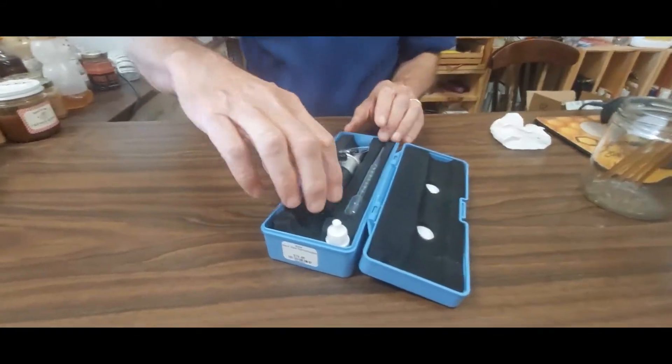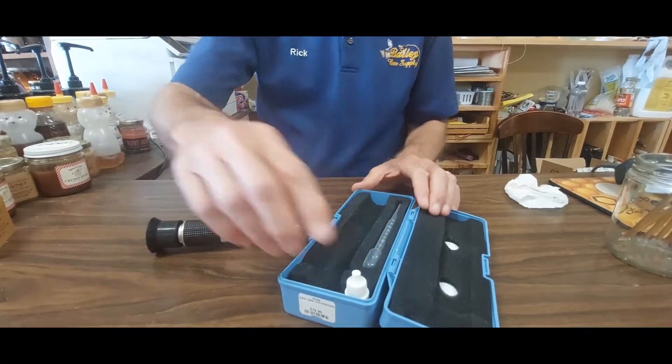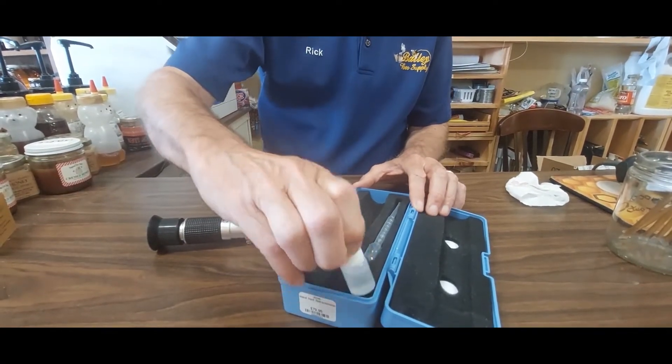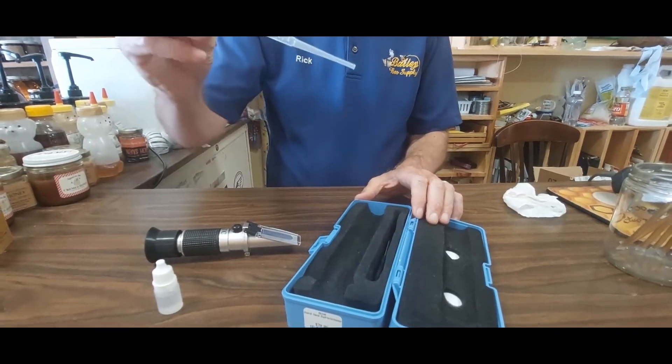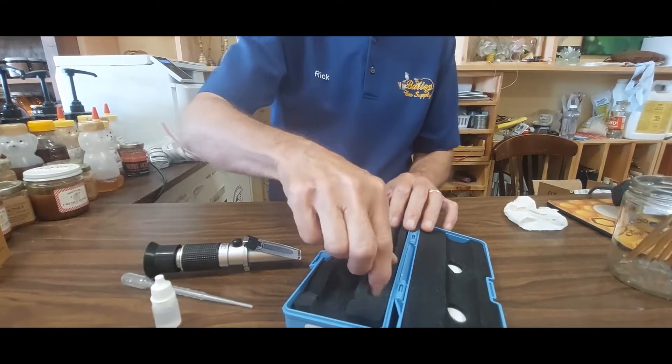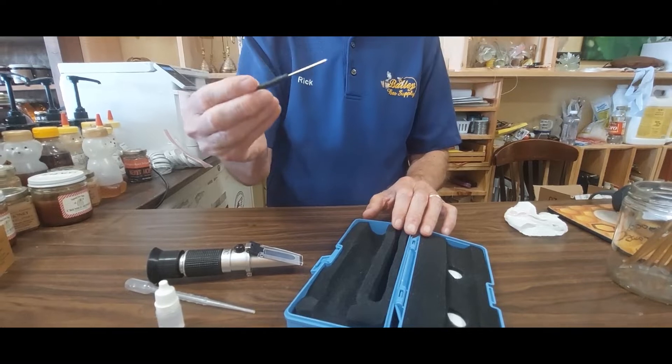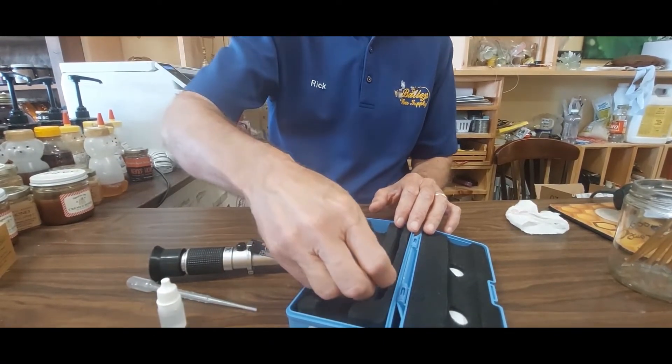We open it up and we have the refractometer. We have calibration oil, the dropper that you can use for transferring your honey sample to the refractometer, and a small screwdriver to change the calibration setting of the refractometer.